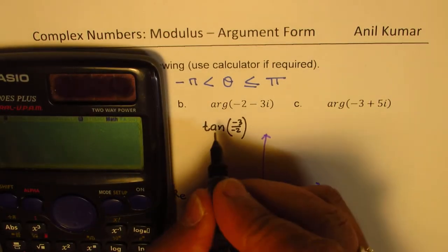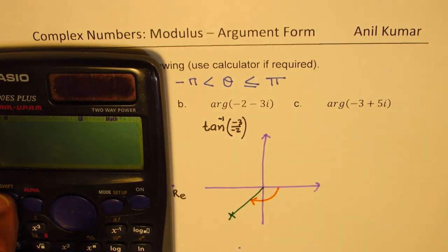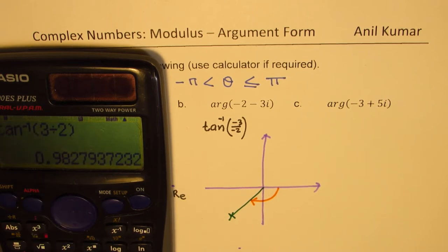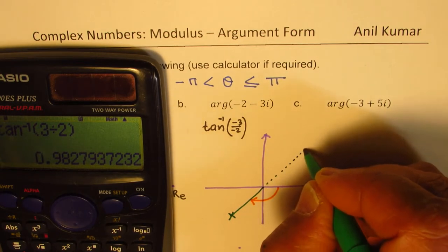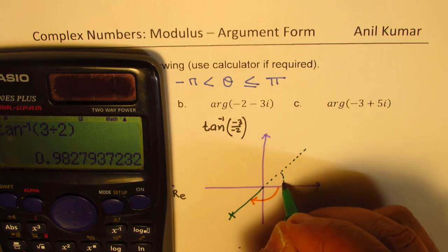So we get shift tan inverse. So we'll do shift tan inverse. I'll write 3 over 2. 3 divided by 2 since it becomes positive. And what I get is 0.98. Now this 0.98 is not our answer. You get the idea? This is 0.98.